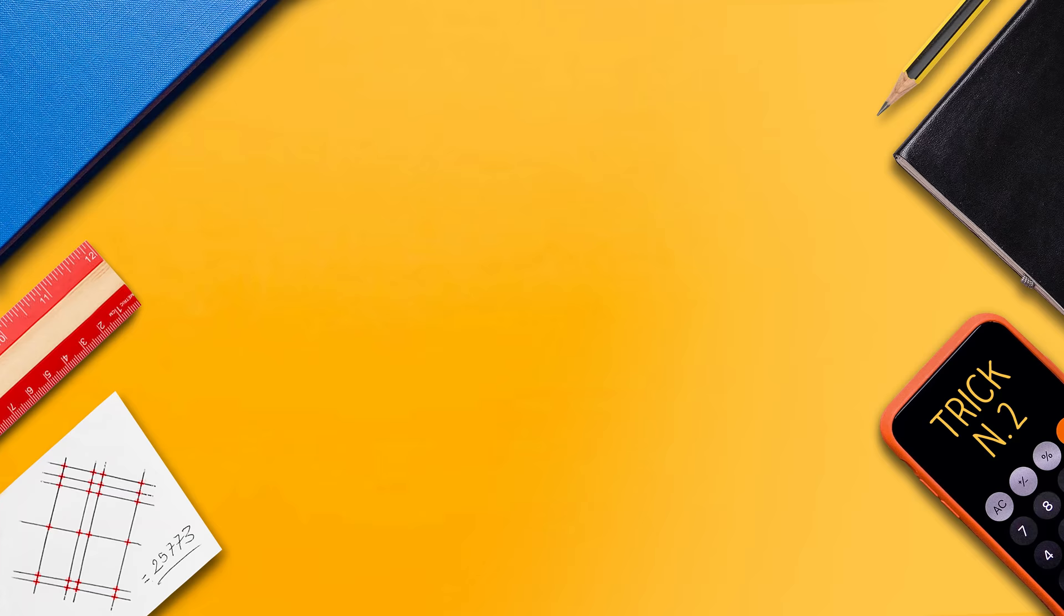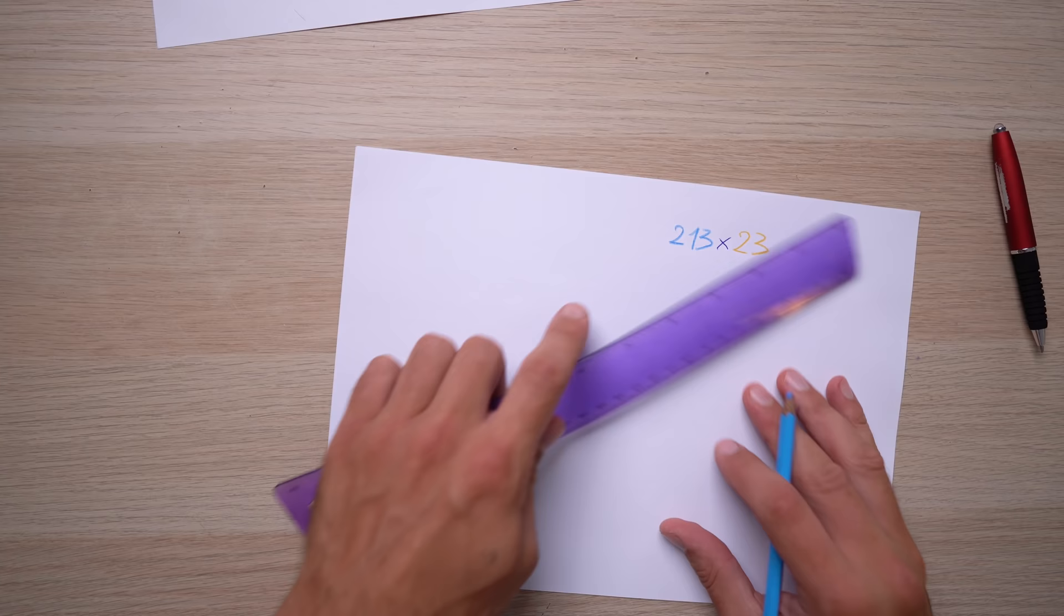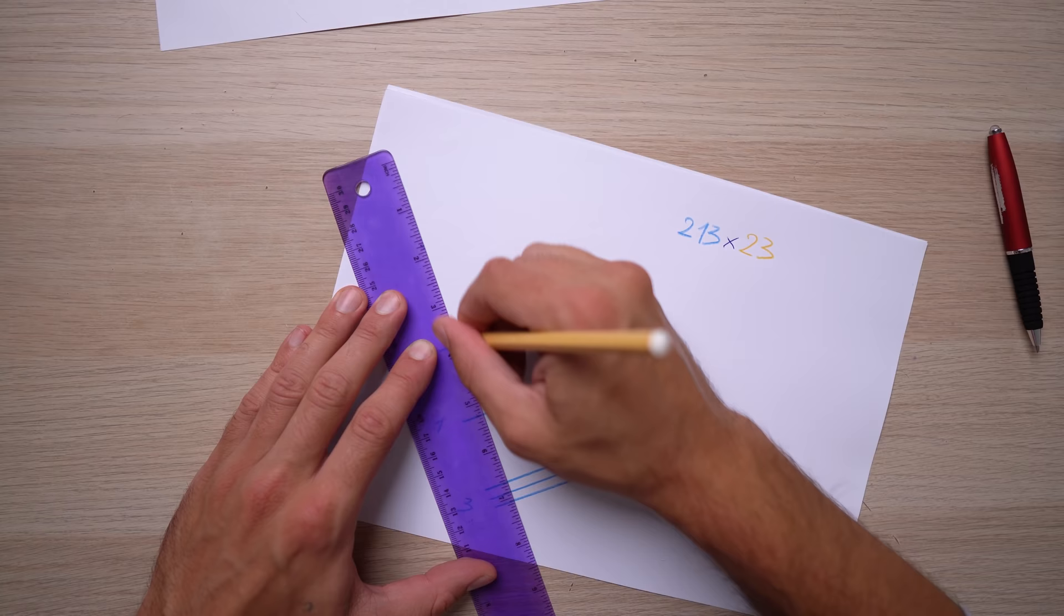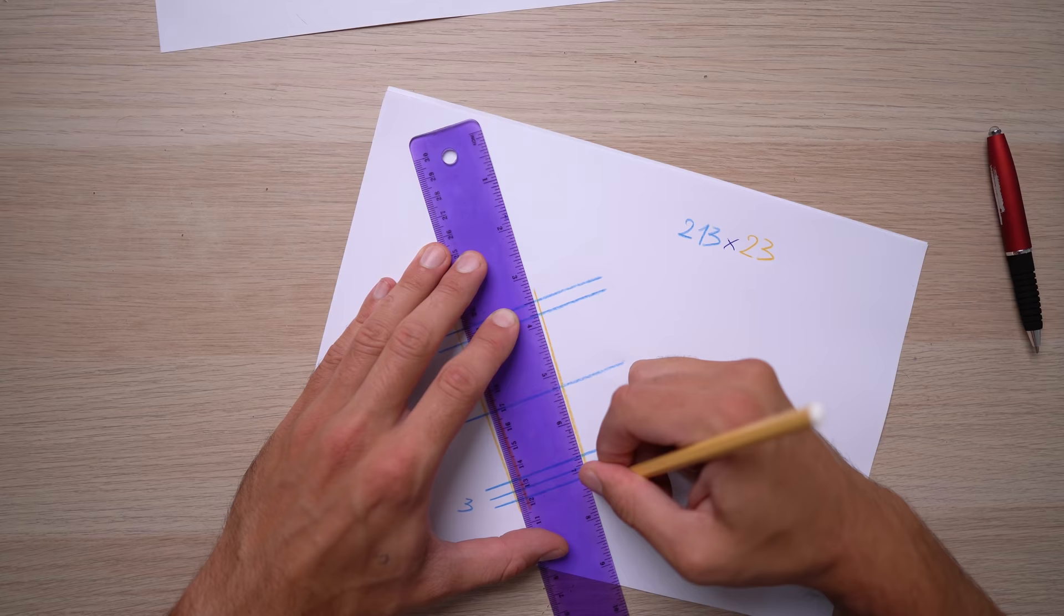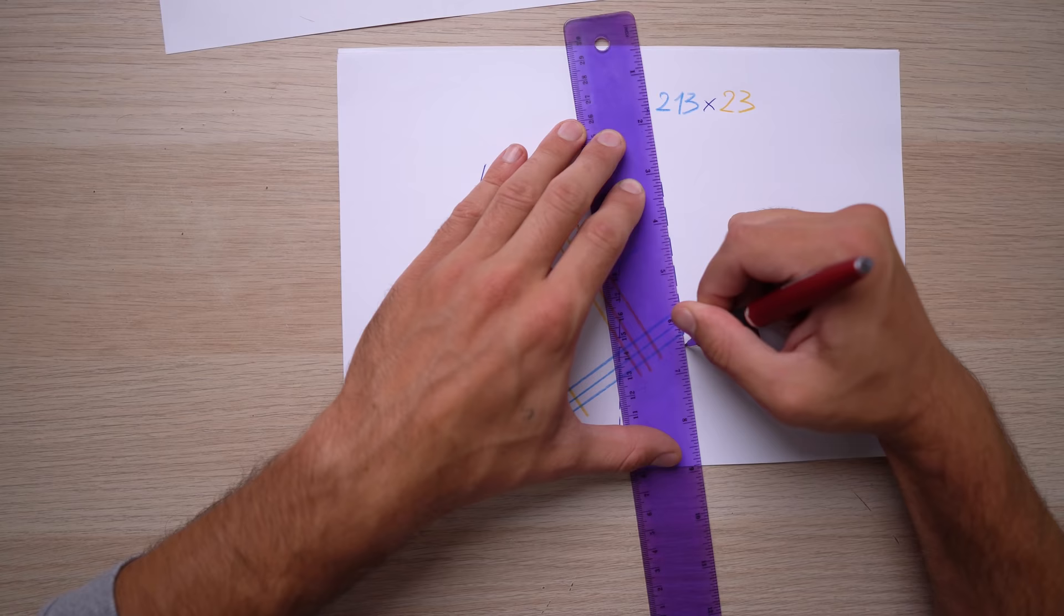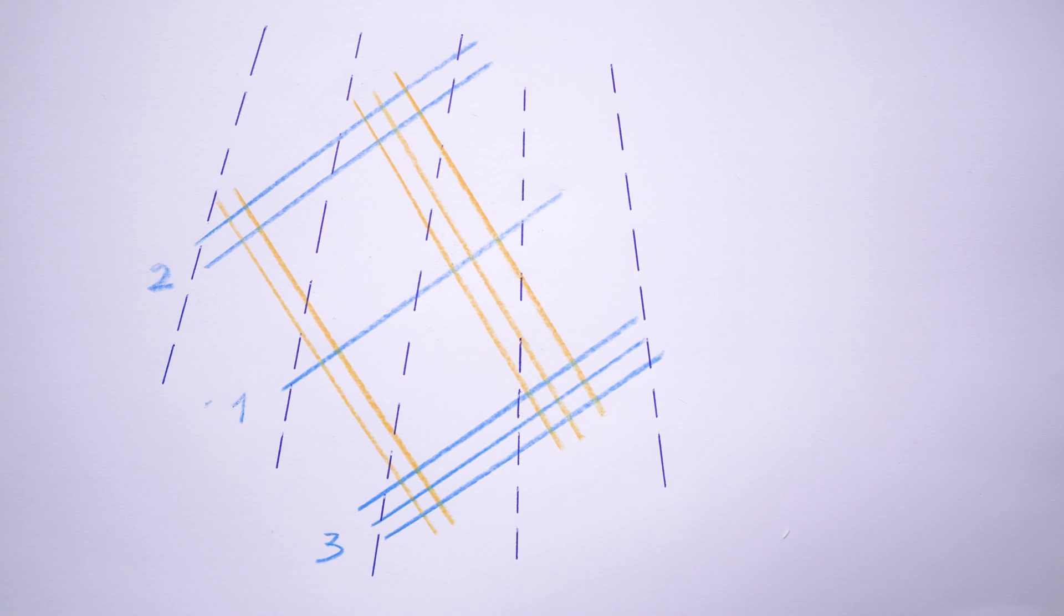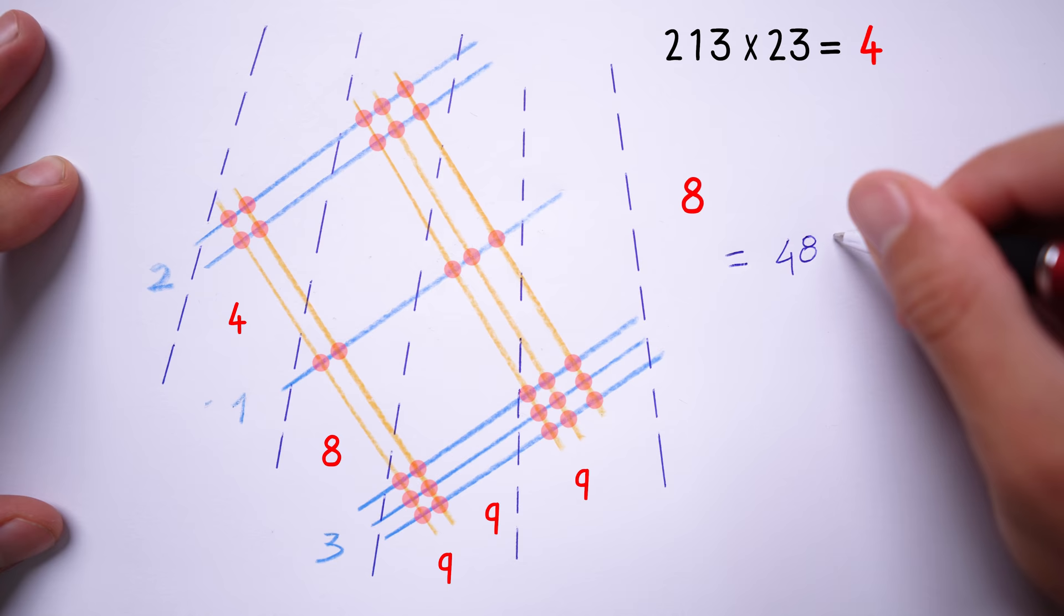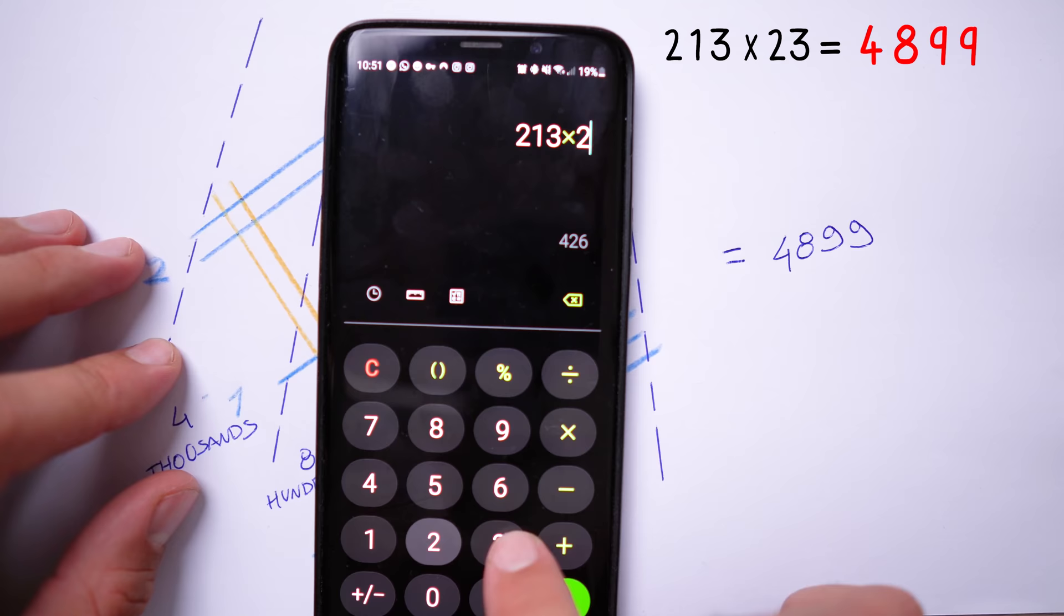We transform 213 in lines separating hundreds, so two lines here, tens, one here and units, three here. And then we represent the 23 with other lines perpendicular to the first ones following basically the same concept. Then we divide the graph by segments. Every segment stands for ones, tens, hundreds, thousands and so on. And then we count how many times the lines crossed in each segment. So the final result is gonna be 4899 and it's perfect.